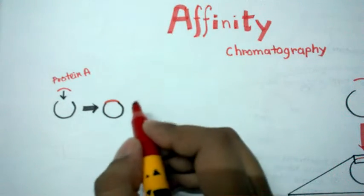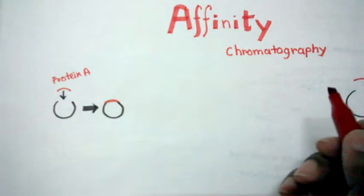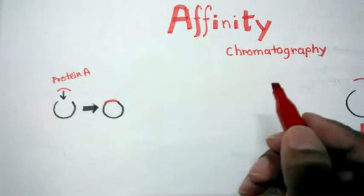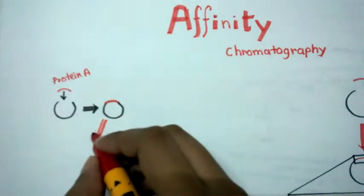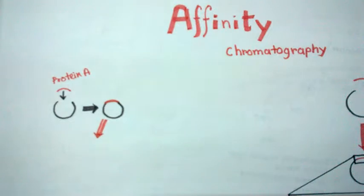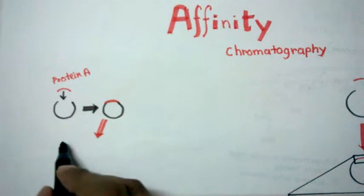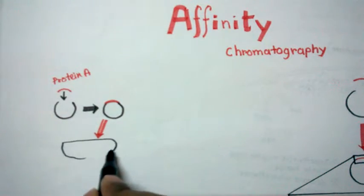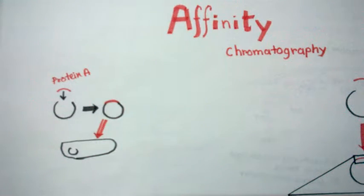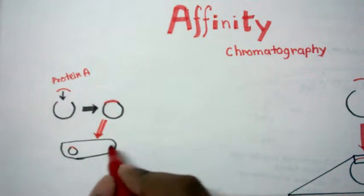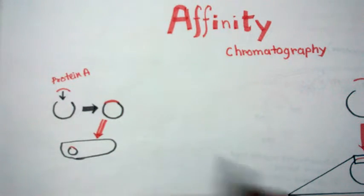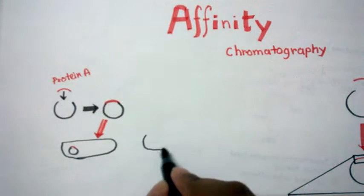So this is our gene of interest inside the bacterial expression vector. And now what we would do, we would transform the bacteria with our expression vector. So now our bacteria is transformed with the expression vector.